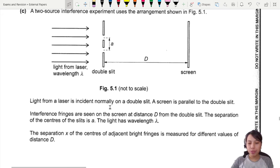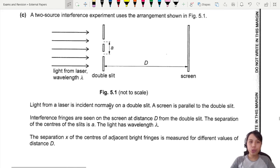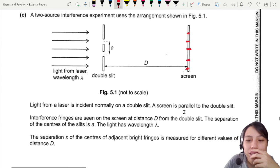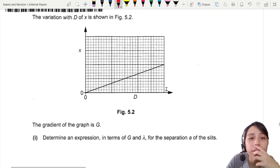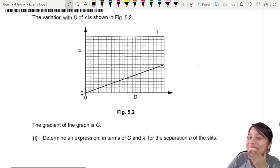Here comes the double-slit interference experiment. A two-source interference experiment: bright fringe, dark fringe, bright fringe, dark fringe. Red color wavelength, so we're going to see something like this. Light is shown, interference fringes are seen. They're telling you what all these alphabets are: a, d, x, and things like that.